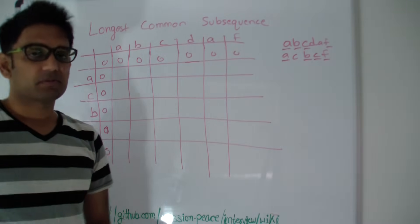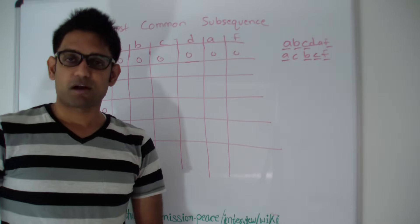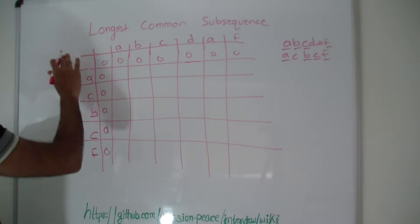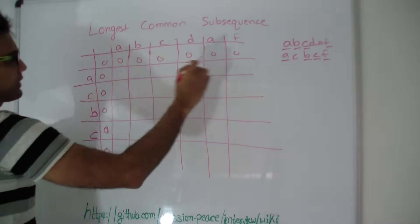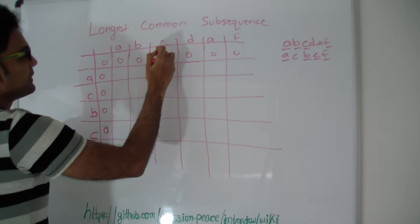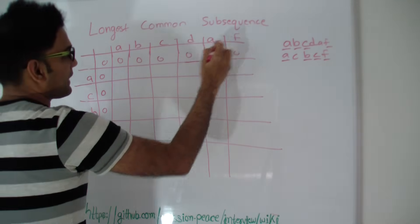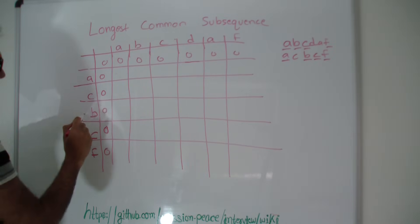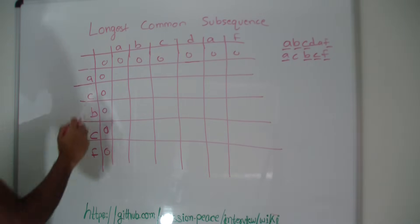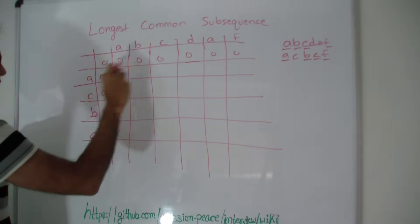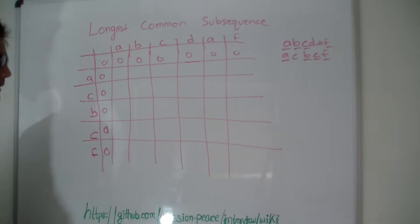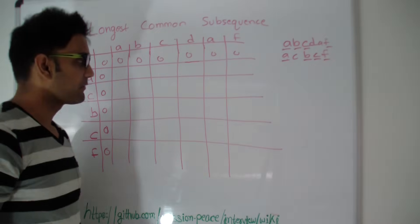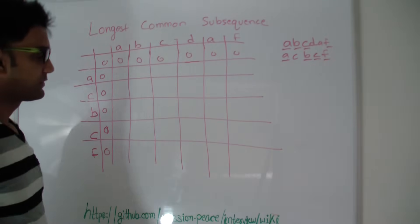So how do we find the longest common subsequence? We will use dynamic programming to solve this question. On the first row I have the first string a,b,c,d,a,f, and on the first column I have the other string a,c,b,c,f. The second row and second column are just populated with zeros. Now let's fill this matrix and finally we'll have our solution when the matrix is totally filled.